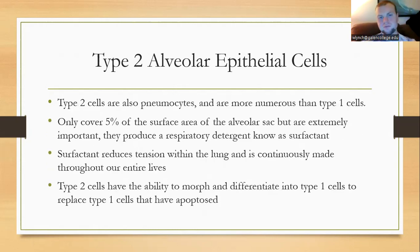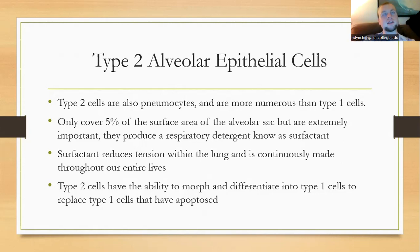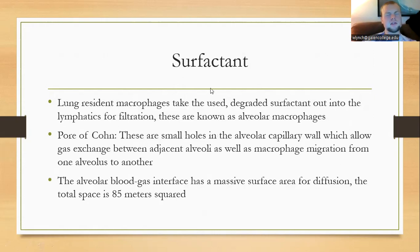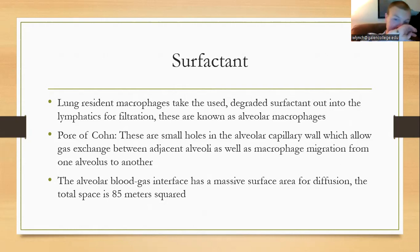Type 2 alveolar cells, also known as pneumocytes, are more numerous than type 1 but only cover 5% of the surface area. They are extremely important because they produce surfactant, which reduces the tension within the lung, keeping it from collapsing in on itself and allowing the lung to inflate and deflate adequately. Type 2 cells can also differentiate into type 1 cells to replace them if they die. Surfactant is detergent in nature, and when used, resident macrophages digest it and send it to the lymphatics.